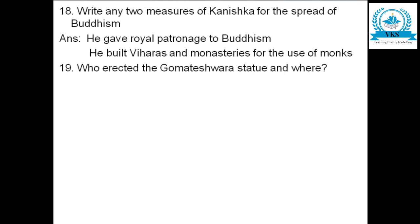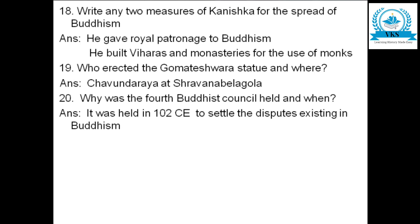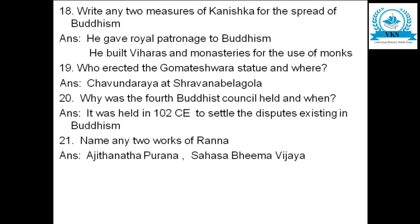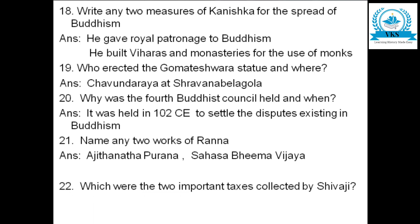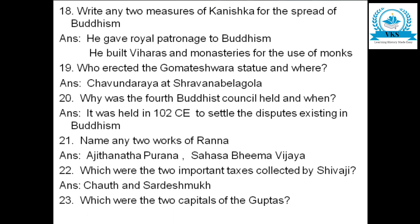Who erected the Gomateshwara statue and where? Chavundaraya at Shravana Belagola. Why was the fourth Buddhist council held and when? The fourth Buddhist council was held in the 1st–2nd century CE to settle the disputes existing in Buddhism. Name any two works of Ranna — Ajita Natha Purana and Sahasabhima Vijaya.